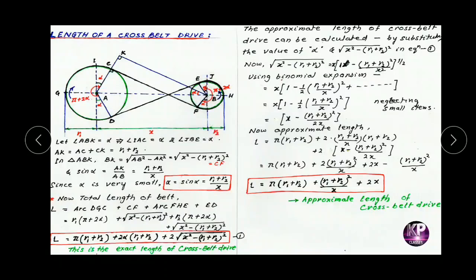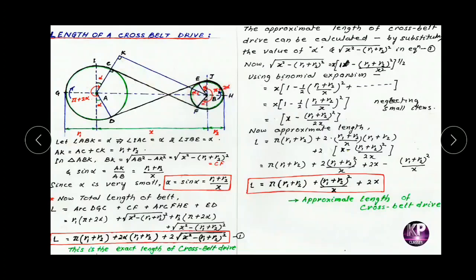First of all, draw a parallel line BK parallel to CF. As a result, CF is perpendicular to SC because CF is the tangent to the driver and SC is the radius — radius makes 90 degrees with the tangent. Similarly, AK also makes 90 degrees with BK. Let us assume angle ABK equal to alpha radians. Then angle BAK equals 90 minus alpha.